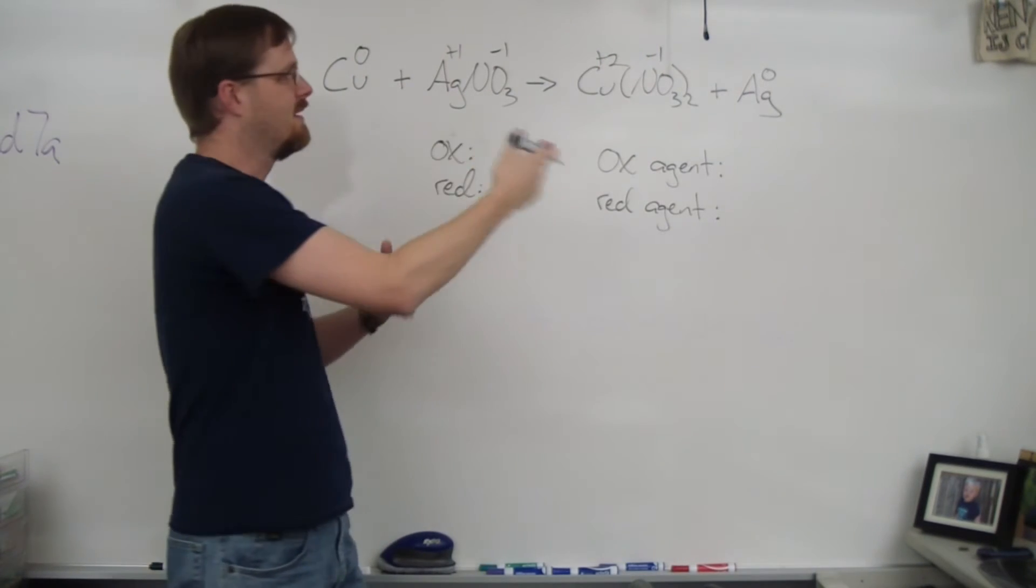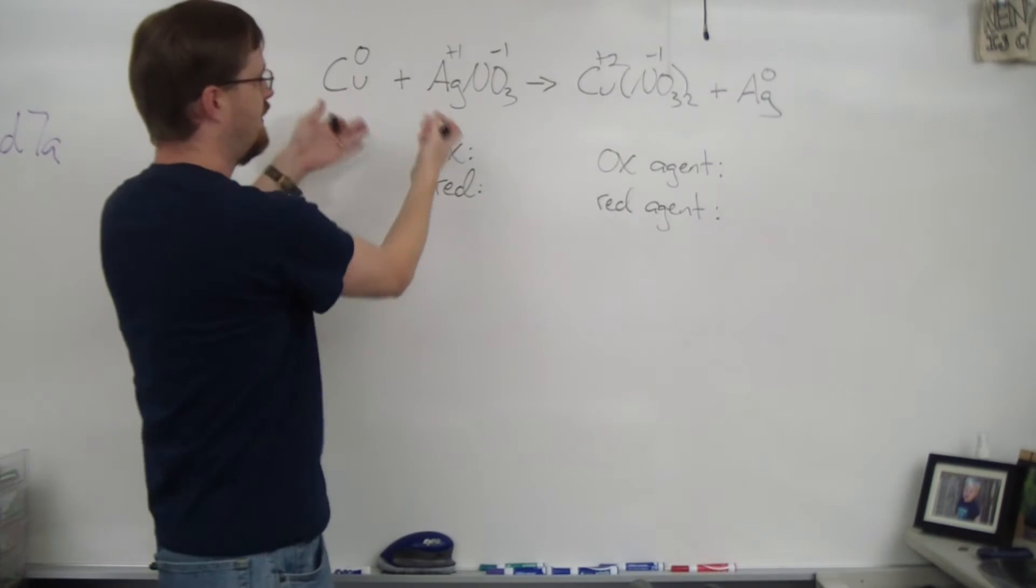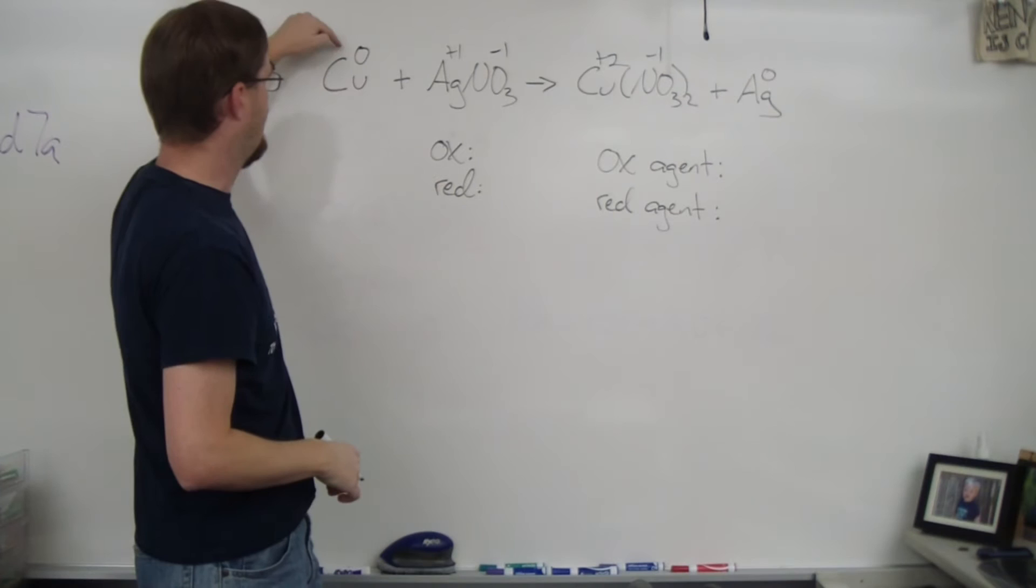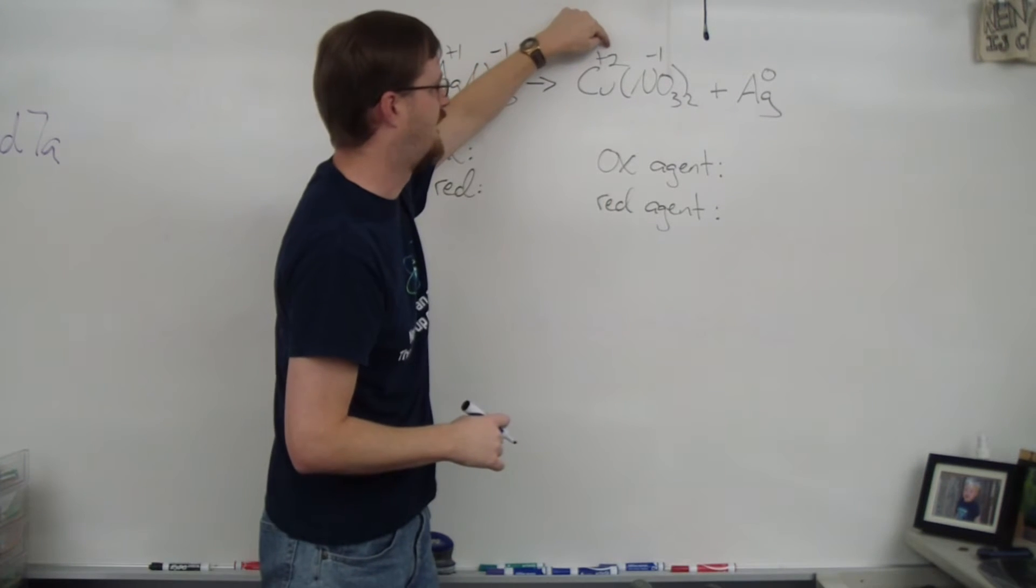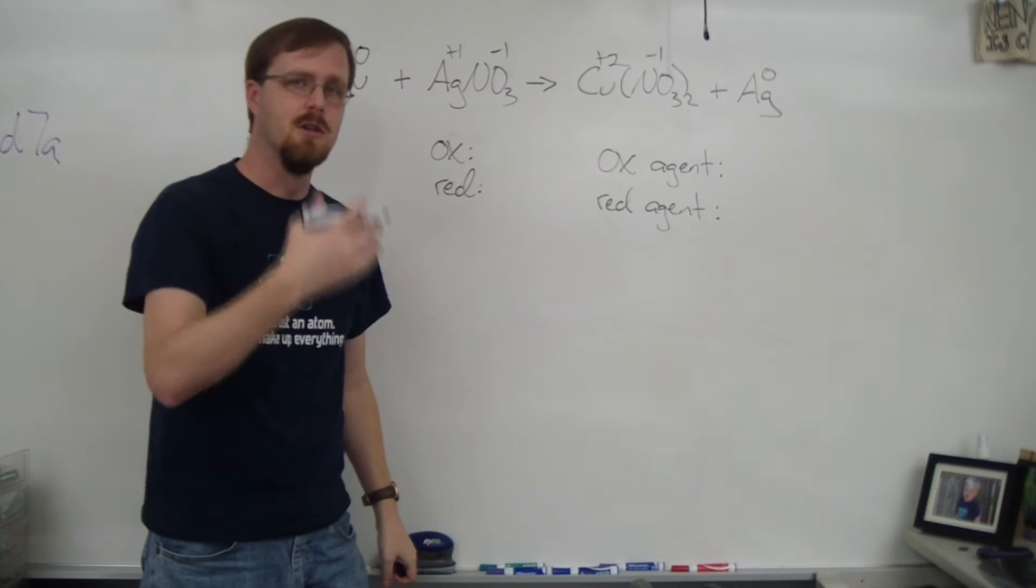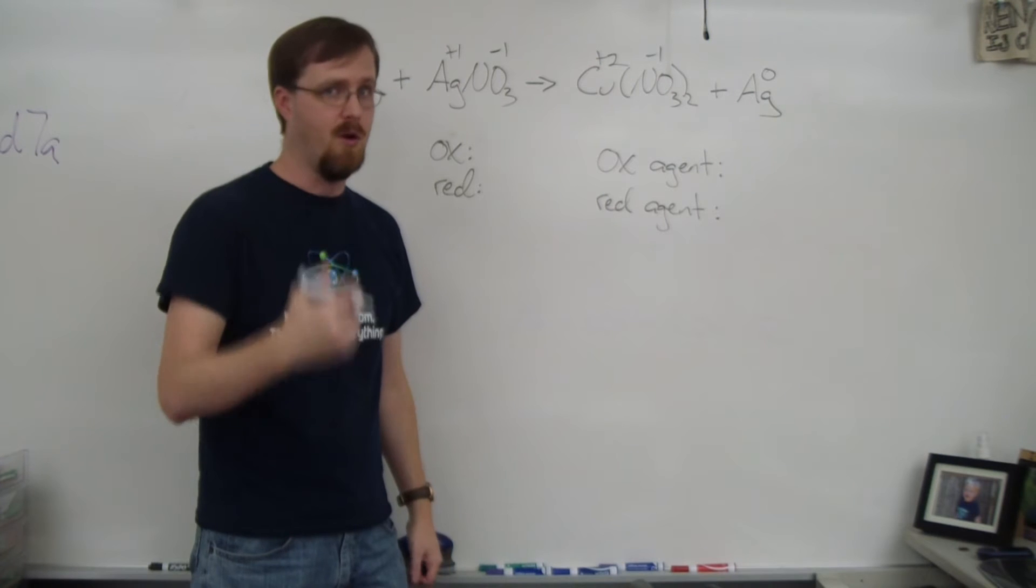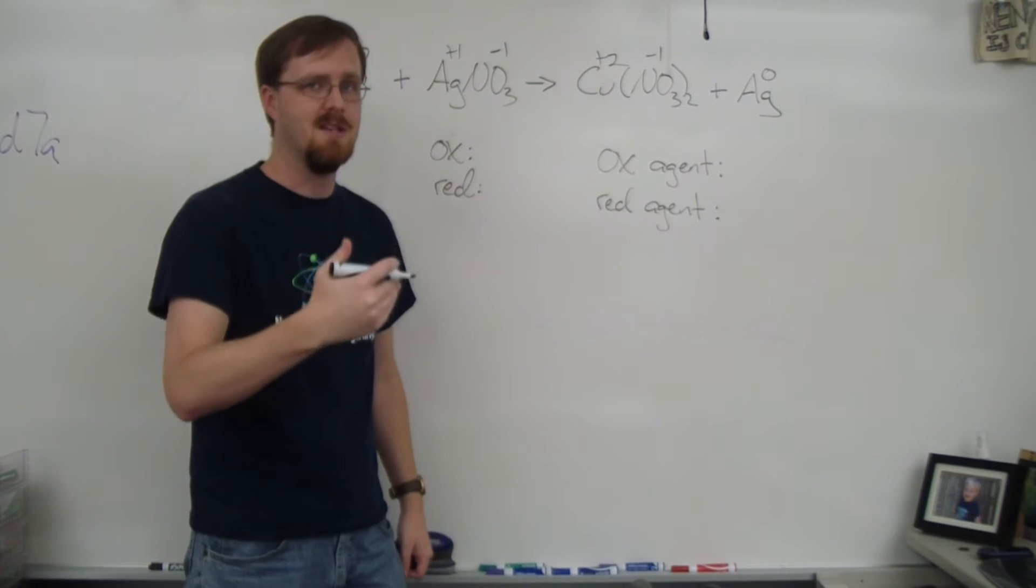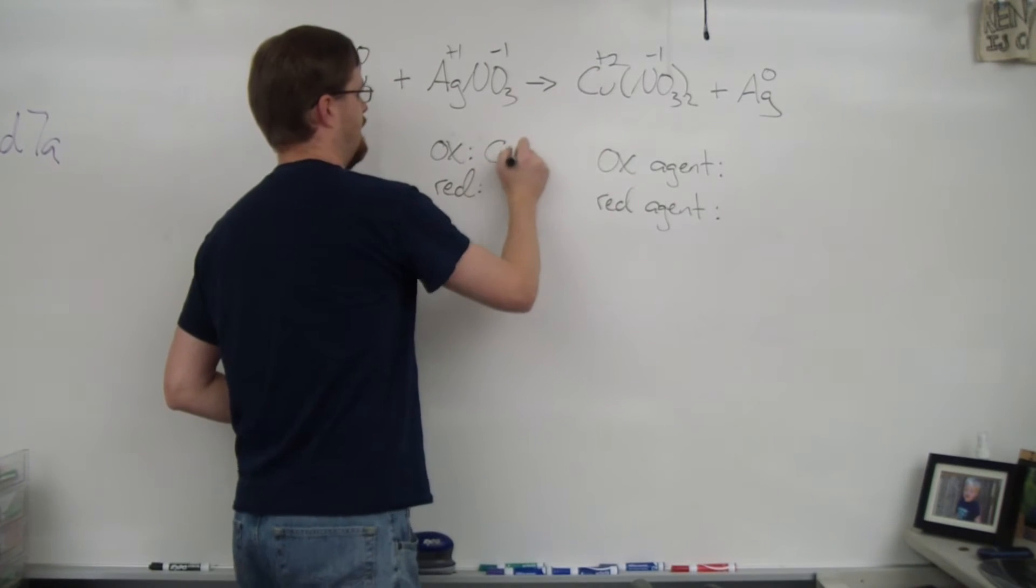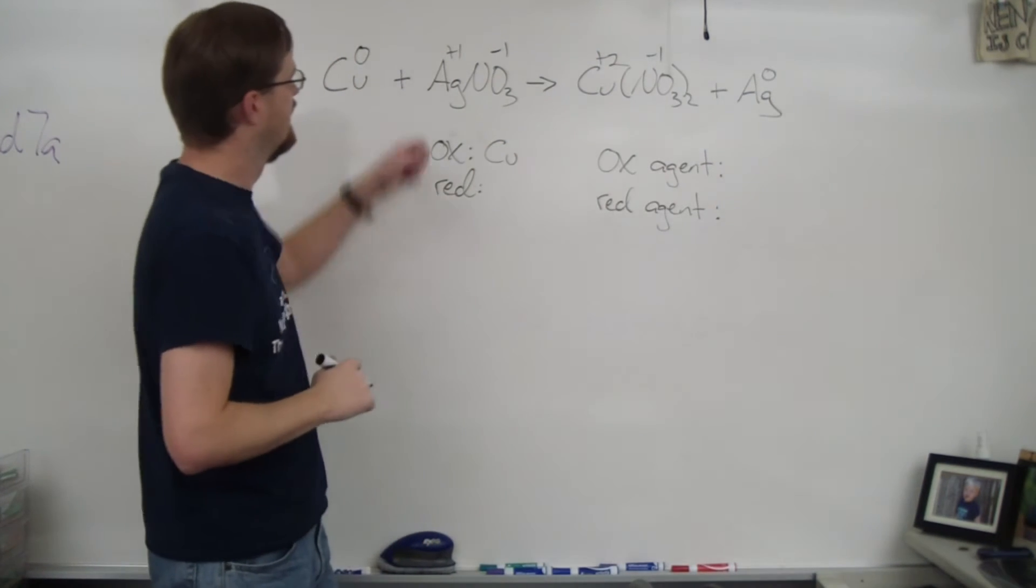Now that I have written my charges, I'm going to compare the reactant side to the product side. Copper goes from a charge of zero to +2. Its charge is going up because it is losing electrons. If you recall from the last video, OIL RIG: oxidation is losing electrons. So copper is the one being oxidized.